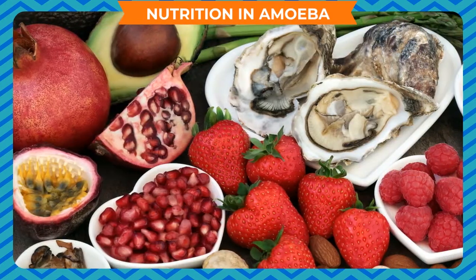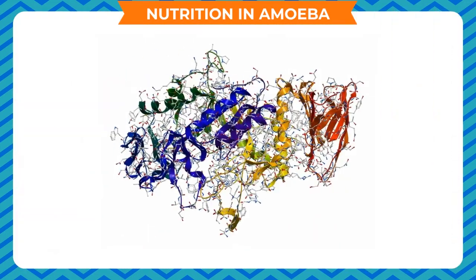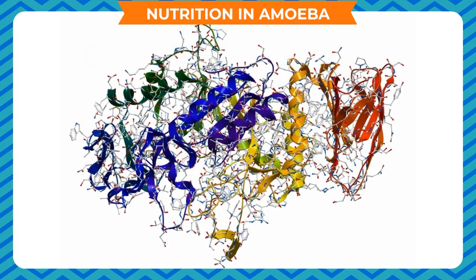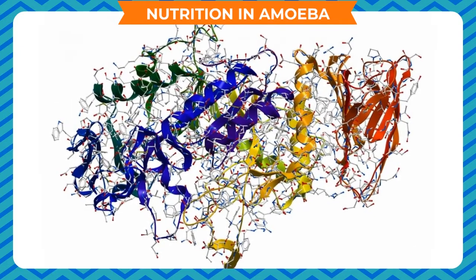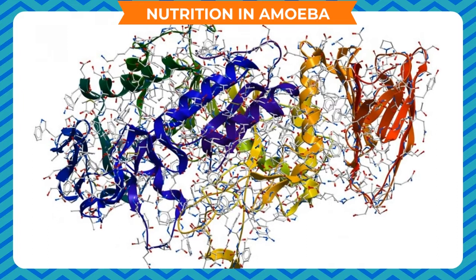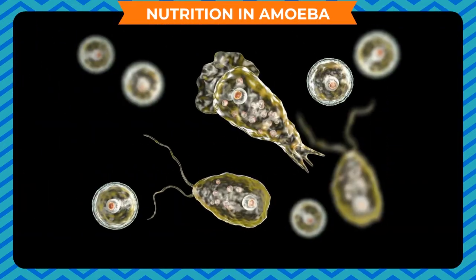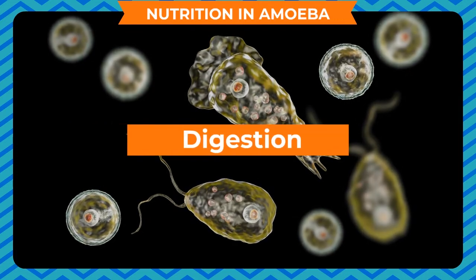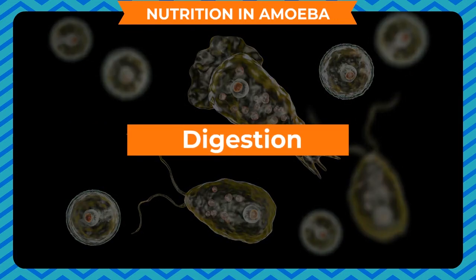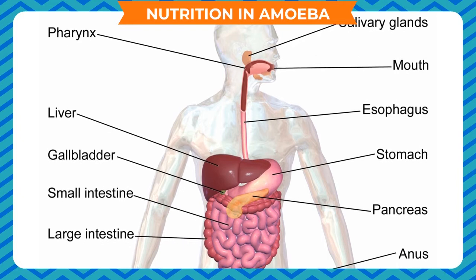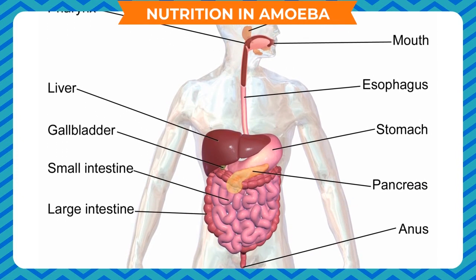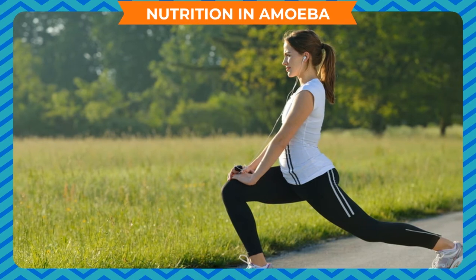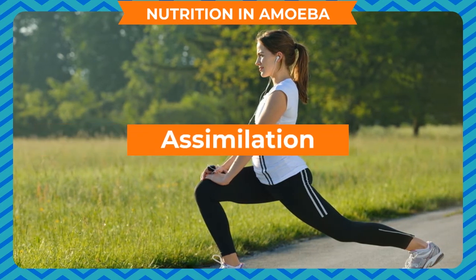Within the food vacuole, the food particle is acted upon by biochemicals called enzymes, released from the protoplasm. These enzymes convert the food particle into simple compounds that can be used by the amoeba. This process is called digestion. The digested material enters the amoebic protoplasm where it is used to release energy and carry out life activities. This is called assimilation.